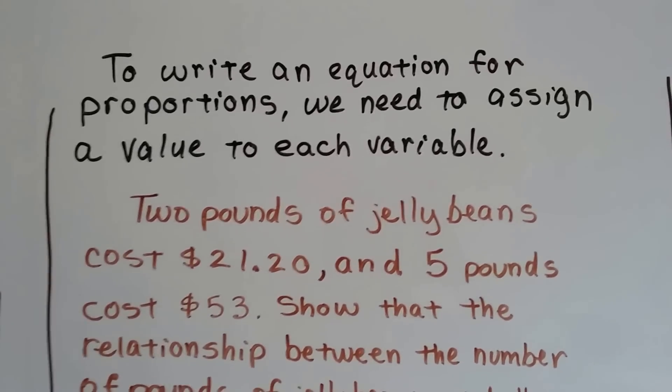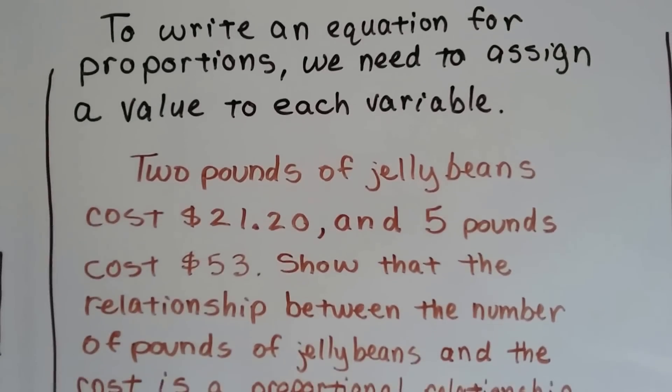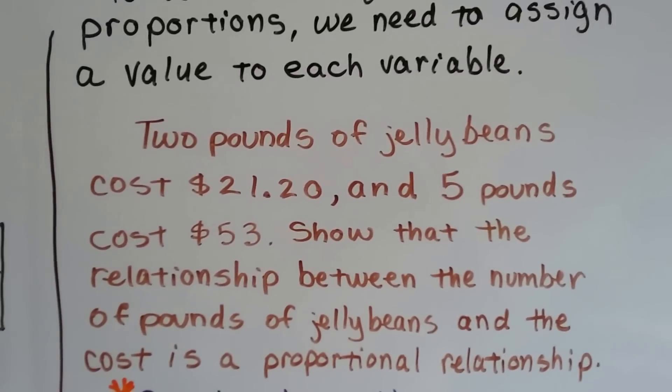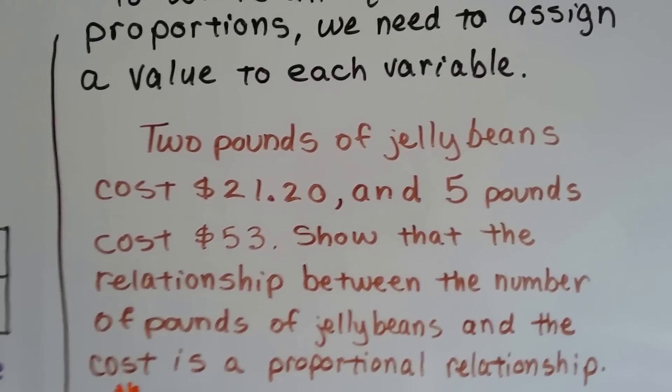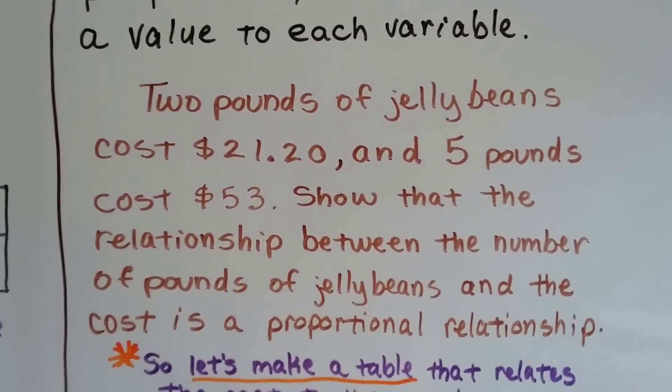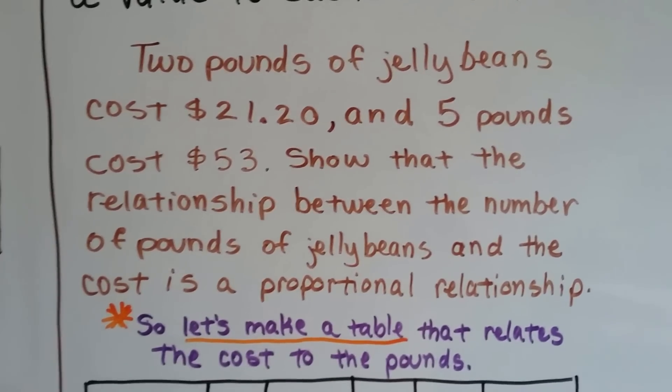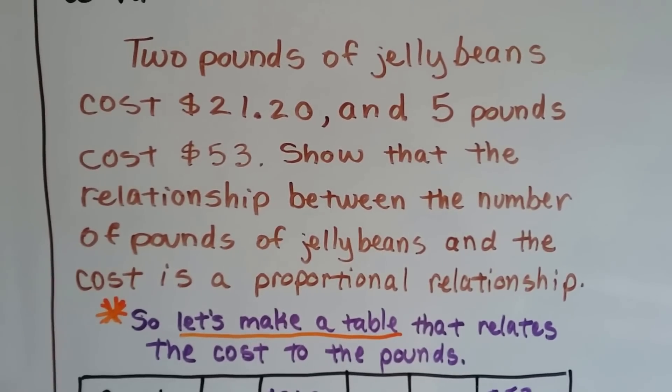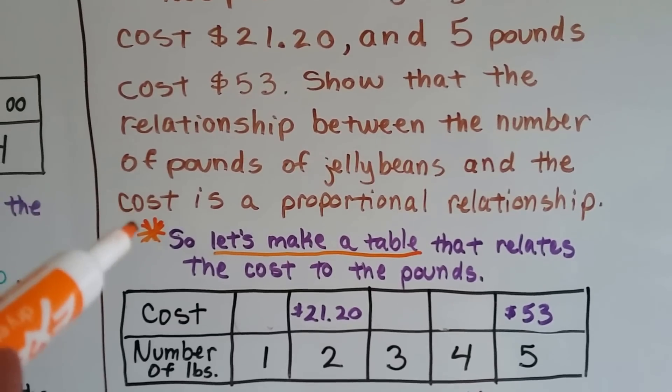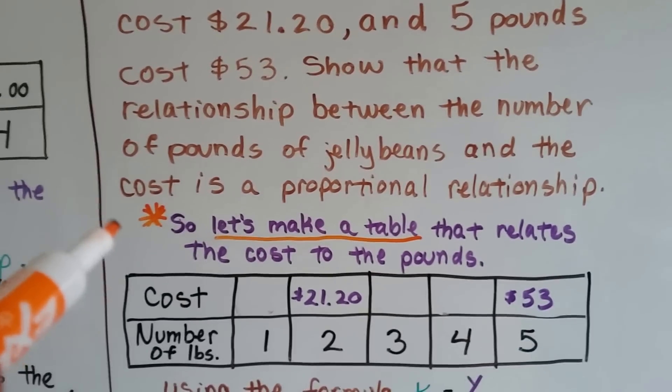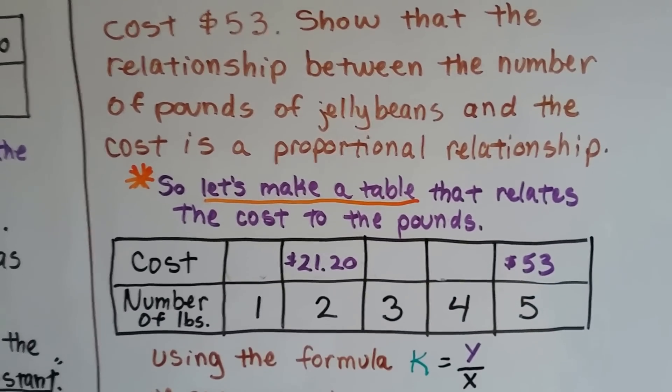Let's say we have 2 pounds of jelly beans, and it costs $21.20, and 5 pounds costs $53. It says to show that the relationship between the number of pounds of jelly beans and the cost is a proportional relationship. This is very important. You need to make a little table that relates the cost to the pounds. It's going to make your life very easy.